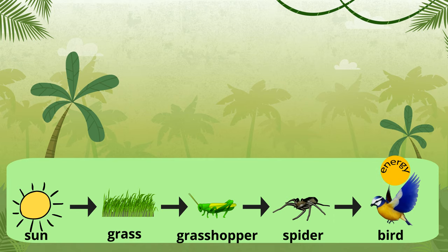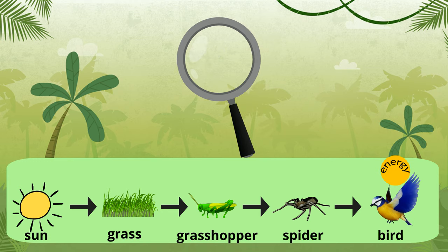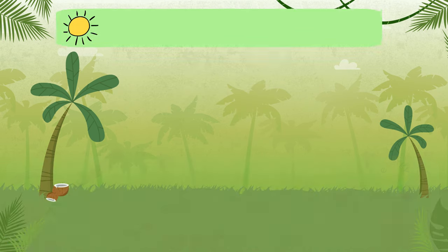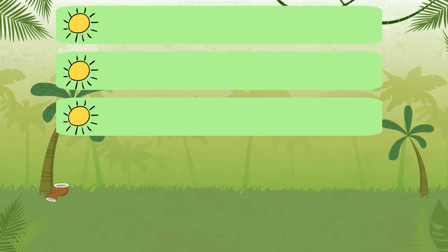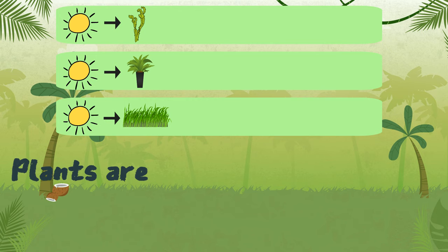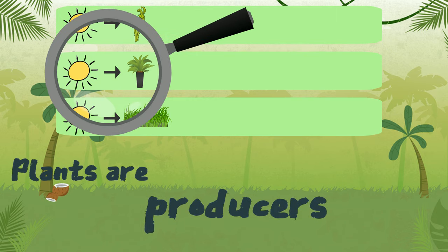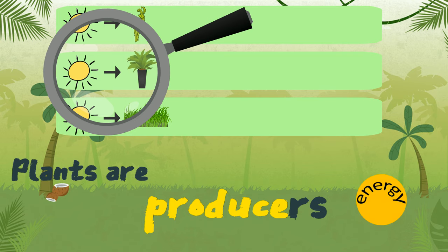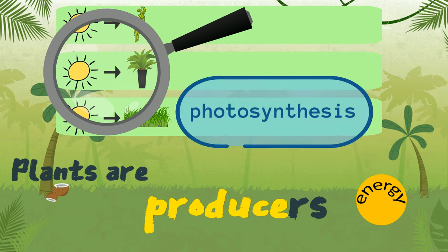Let's look a little more closely at each step in a food chain. All food chains begin with the sun. Energy is passed on from the sun to plants. Plants are called producers, because they absorb sunlight and use it to produce their own energy. This process is called photosynthesis.